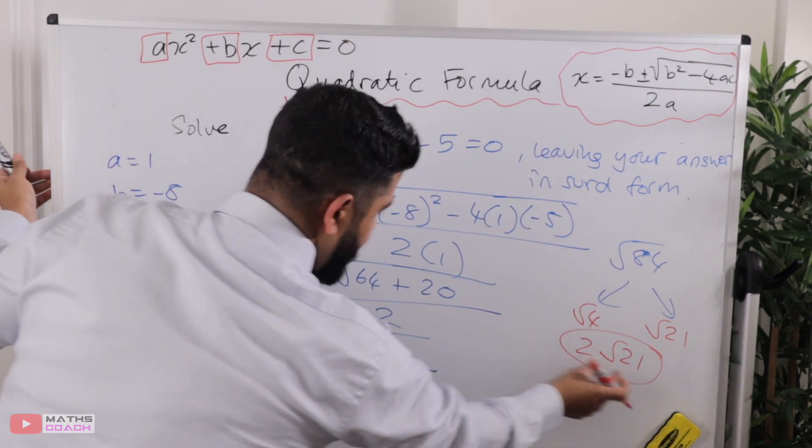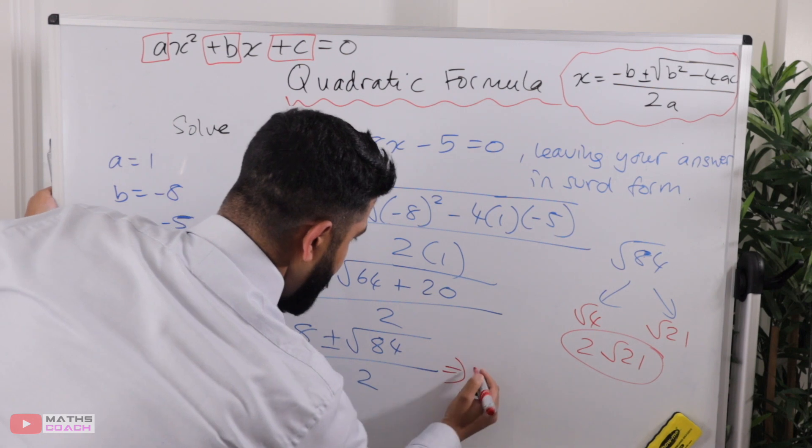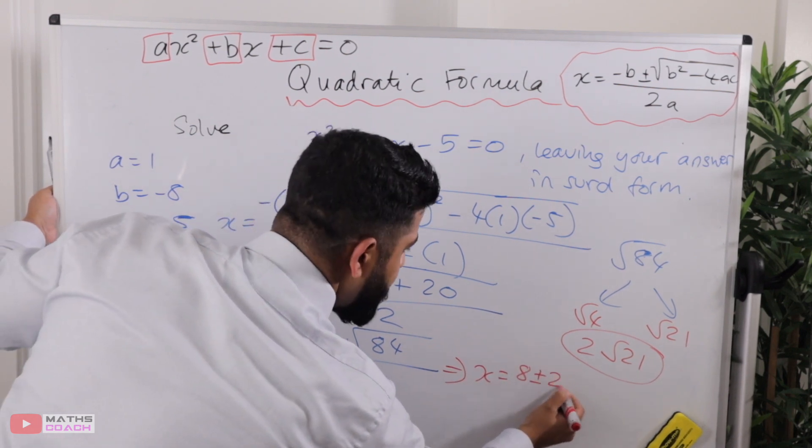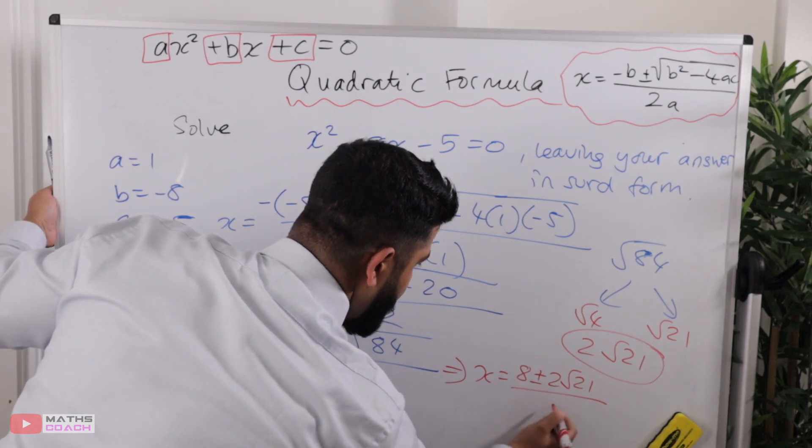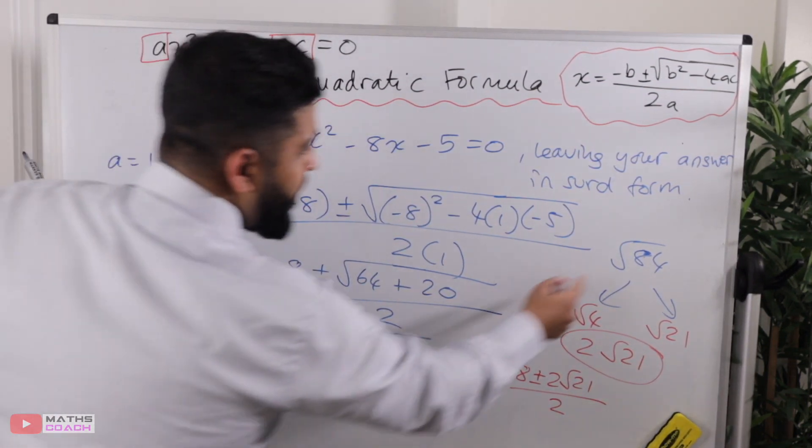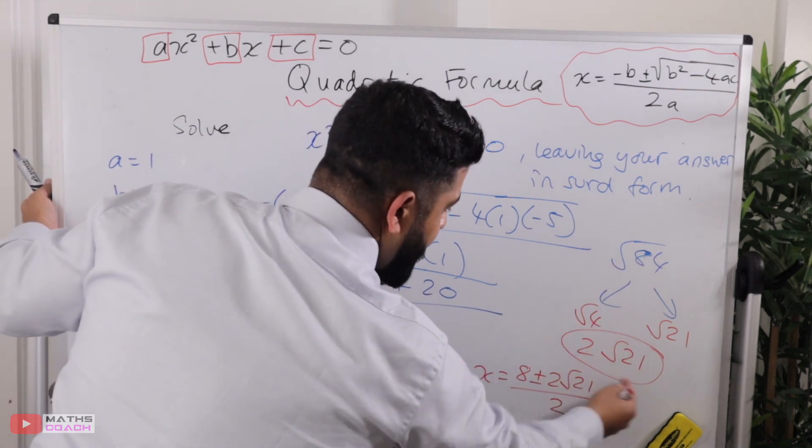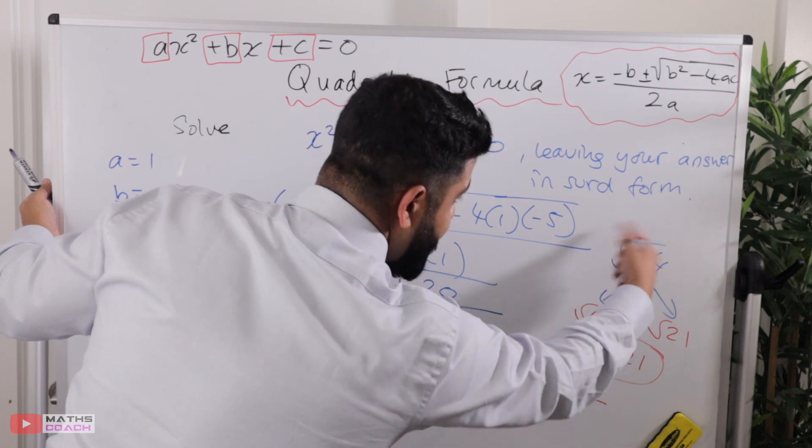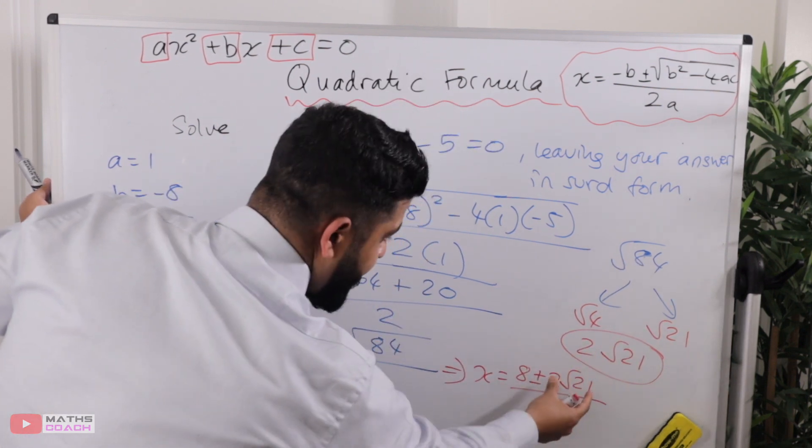I'm going to now put that 2 root 21 in here, so I'll have x equals 8 plus or minus 2 root 21 all over 2. You see that root 84, I've broken it down into this form, so 2 root 21 is still root 84, and I'll just put that in here.